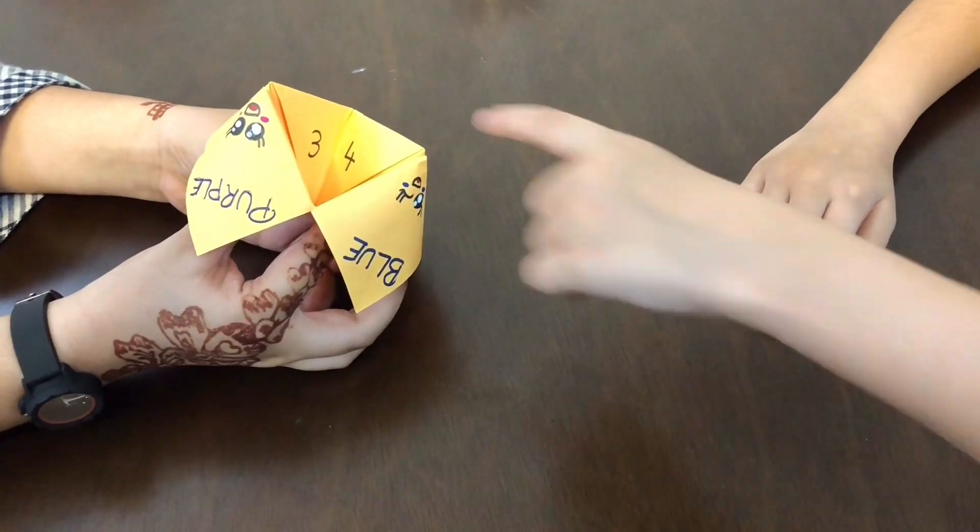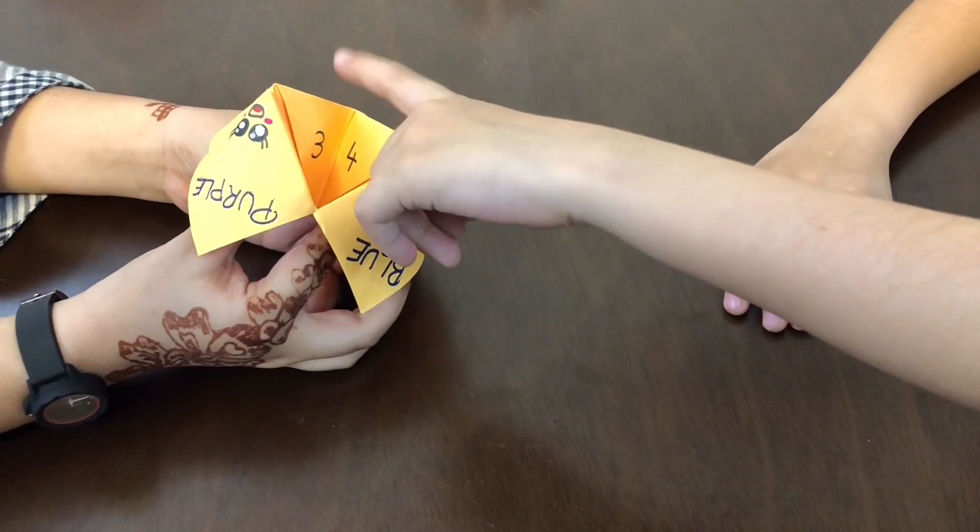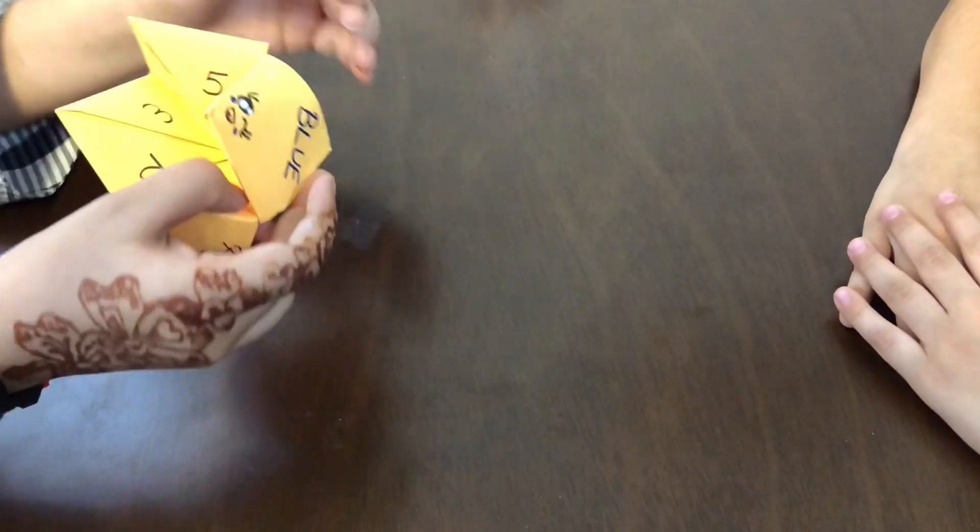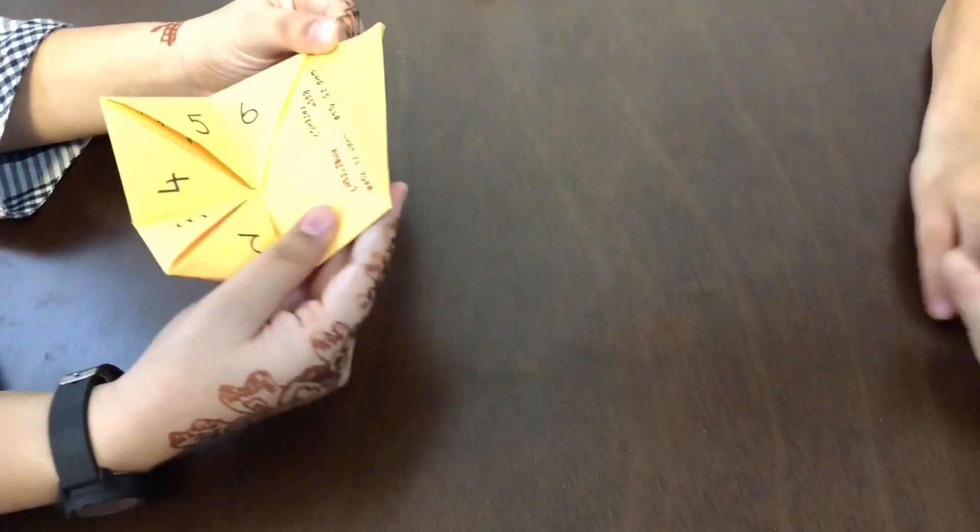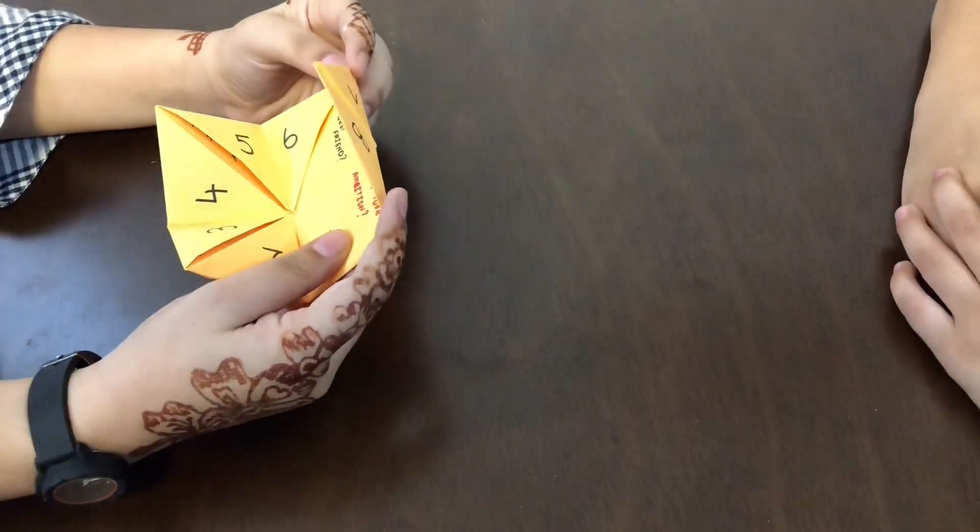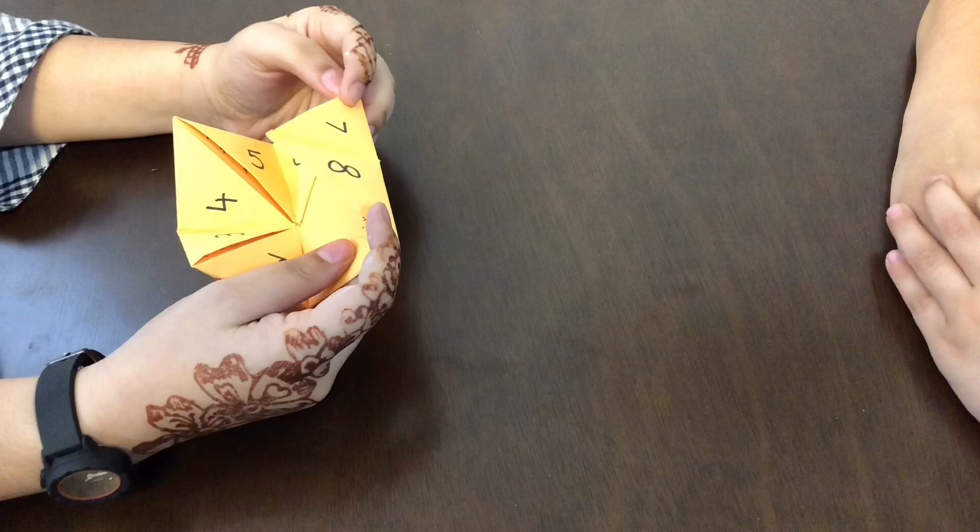Again, choose a number. I choose seven. Okay, so there is a question in seven. It is, who is your best friend? My best friend is Imad.